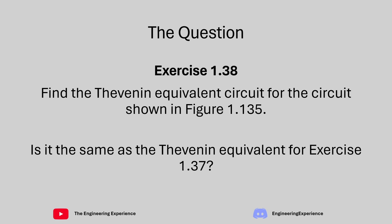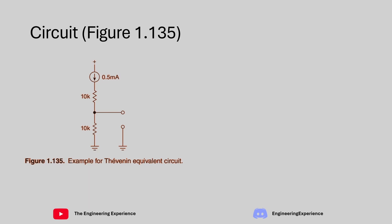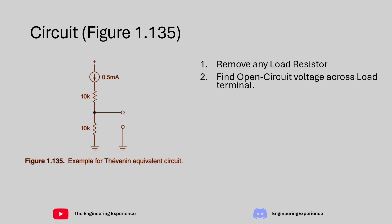We will be comparing the two circuits right at the end. The circuit given in figure 1.135 is shown on the screen now. There is basically a 0.5 milliamp current source in series with two 10k resistors. The output of this circuit is from the top of the bottom resistor, and that is the output node. In order to find the Thevenin equivalent circuit, first we need to remove any load resistors. So we don't have any load resistors connected to this node, and we need to find the voltage that would appear on this node — the open circuit voltage.